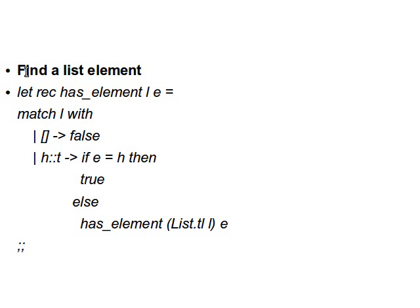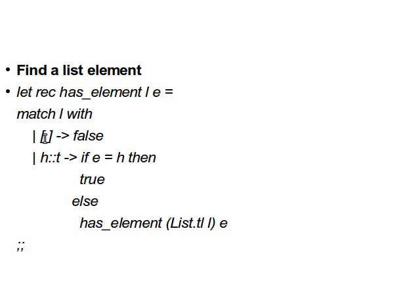Let's assume that we have a list of some items and we want to check whether an item is a member of that list or not. Here we have a function — `let rec`, so it's a recursive function — called `has_element`. It receives two arguments: `l` and `e`. We're doing pattern matching with `l`: if `l` is an empty list (two square brackets, opening and closing) then return false.